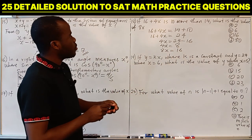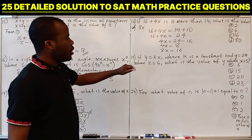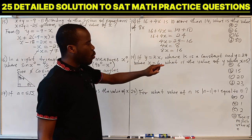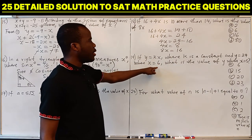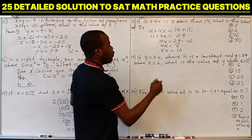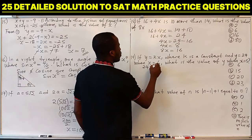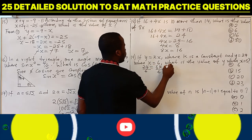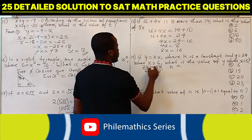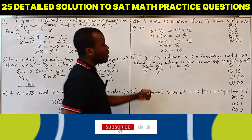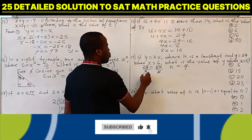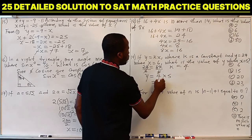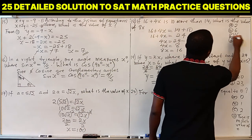Question 19: if Y equals KX (direct proportion) where K is a constant, and Y is 24 when X is 6, find Y when X is 5. Using Y equals 24 and X equals 6: 24 equals 6K, so K equals 4. Substituting K equals 4 and X equals 5 gives Y equals 4 times 5, which is 20.